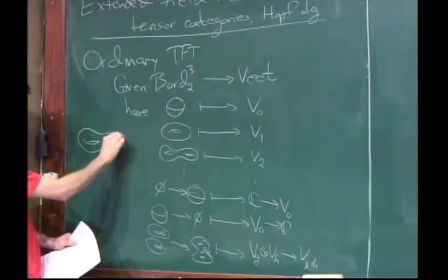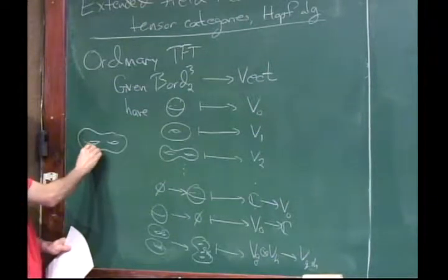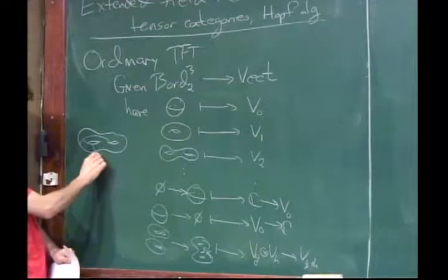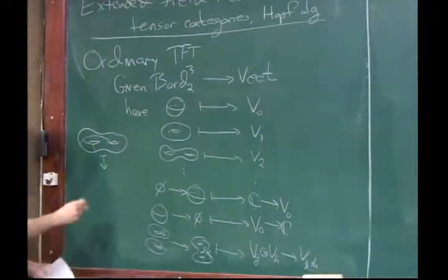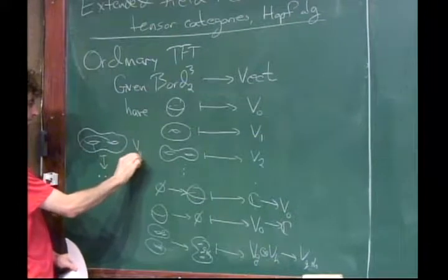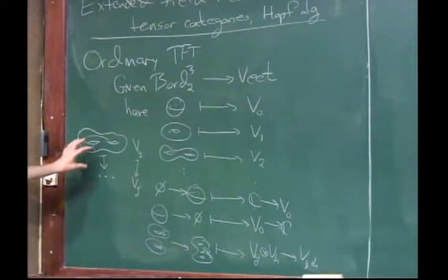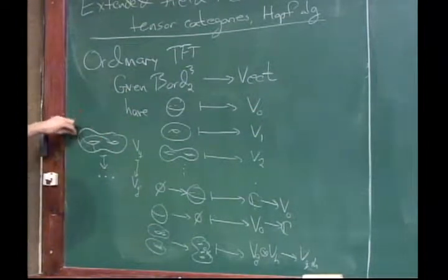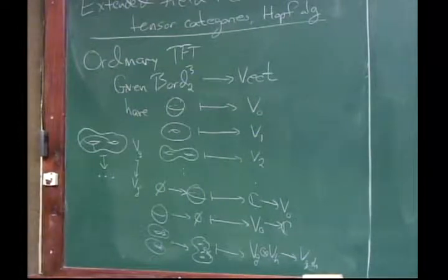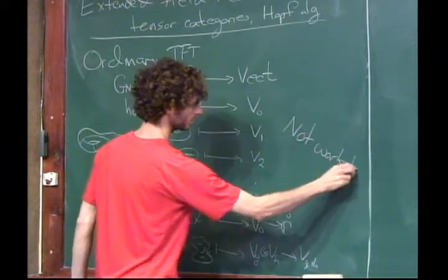Suppose I have some surface; if I have some simple closed curve in it, I can glue on a two-handle to that to produce some other surface. That produces some map from whatever vector space this was to the result of that two-handle addition. The problem is that suddenly the set of all simple closed curves comes in, and the collection of data looks a bit uncontrollable. So you end up deciding that this is really not a workable approach.